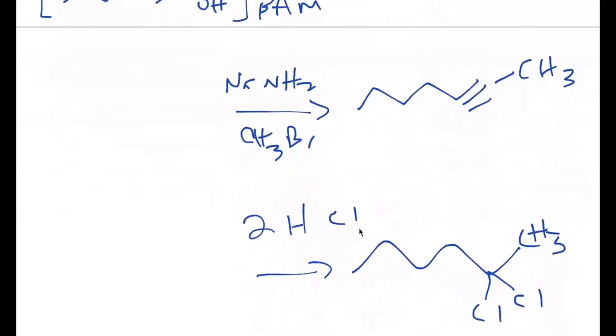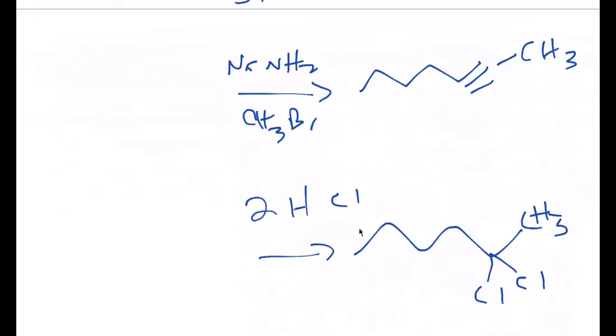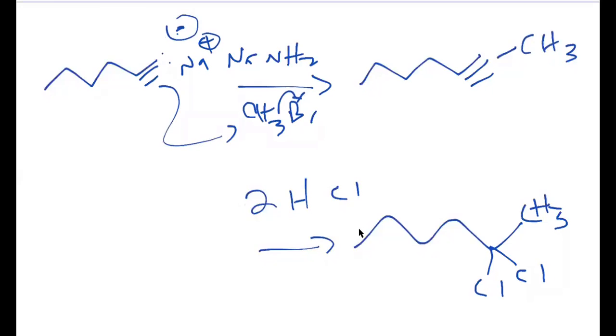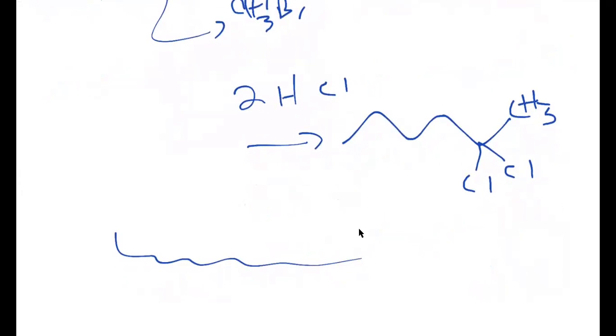And then for the next one, that's an acetylide anion formation, right? So you got that acetylide anion that you make. It's going to react with CH3Br, or methyl bromide, like so, and you're going to get a methyl group attached to the end of that alkyne.